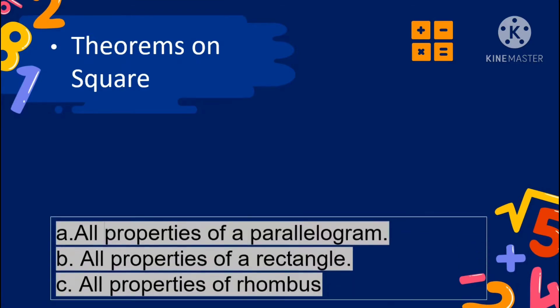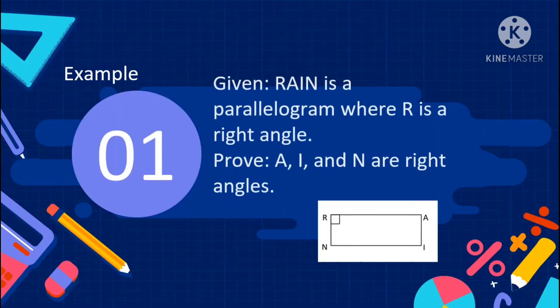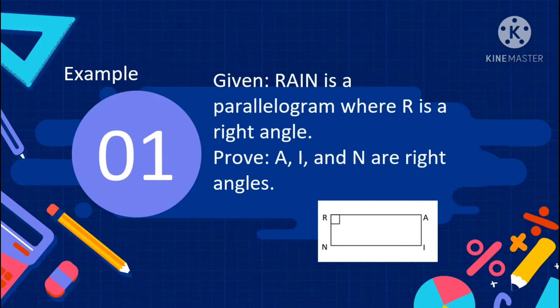Theorems on square: a square has all properties of a parallelogram, all properties of a rectangle, and all properties of a rhombus. Let us proceed to Example number 1. Given R, A, I, N is a parallelogram where R is a right angle.